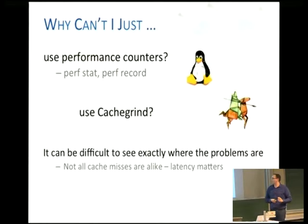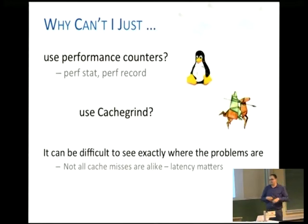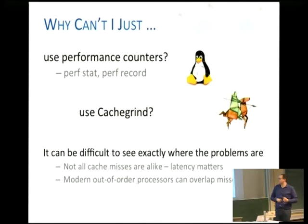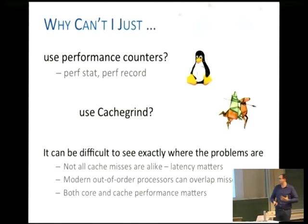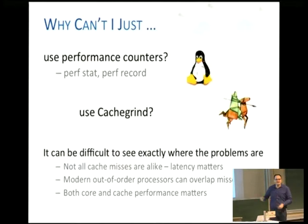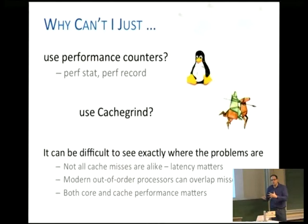This is basically computer architecture 101 — sometimes you have long latency loads, and sometimes the cache misses are not very important, so it doesn't really affect performance all the time. Modern out-of-order cores can overlap these misses, so you don't really know which ones are important and which ones are not. Both core performance and cache performance matter, and they're really tightly intertwined. That's why we developed Sniper.